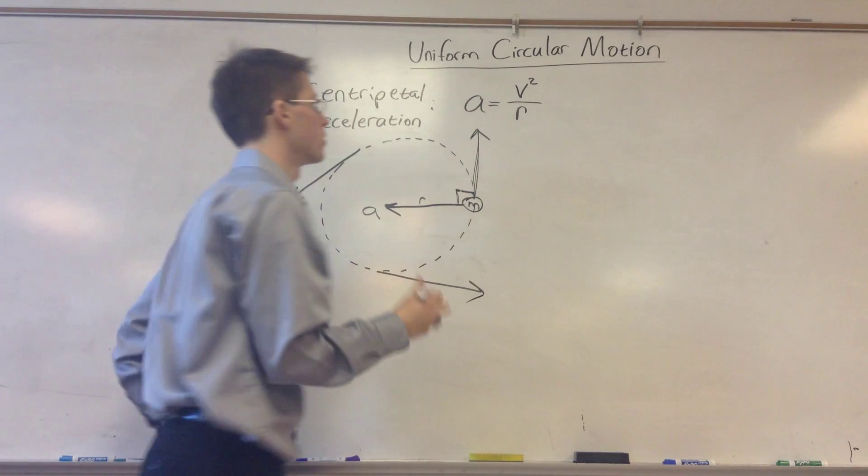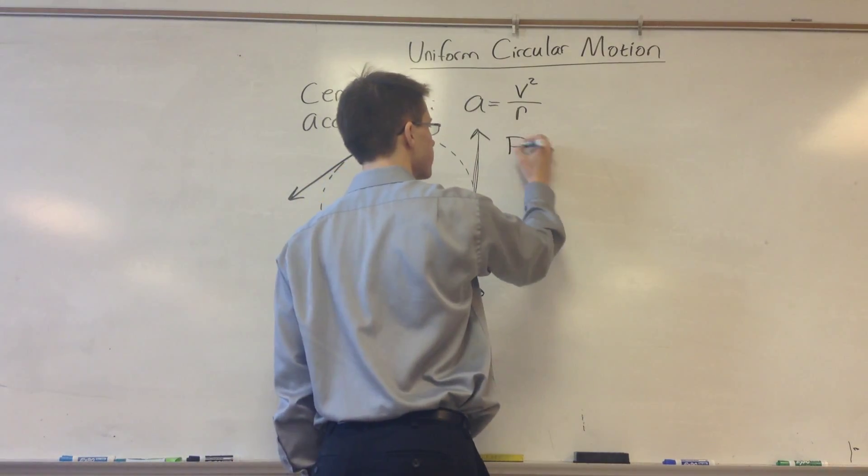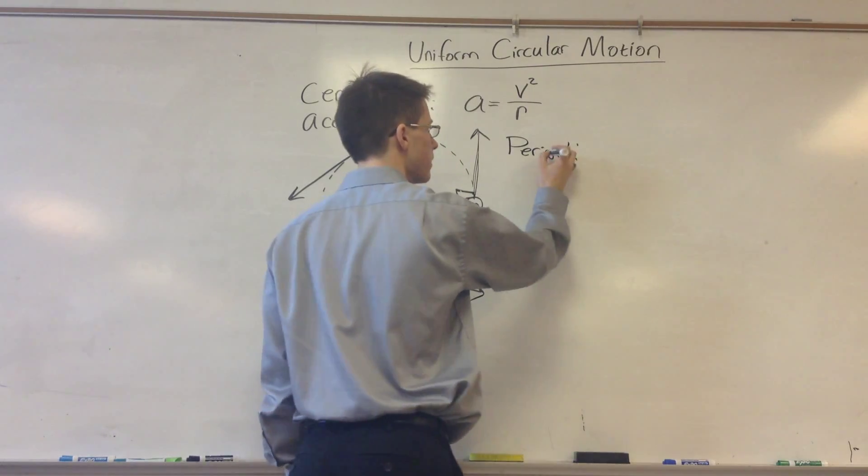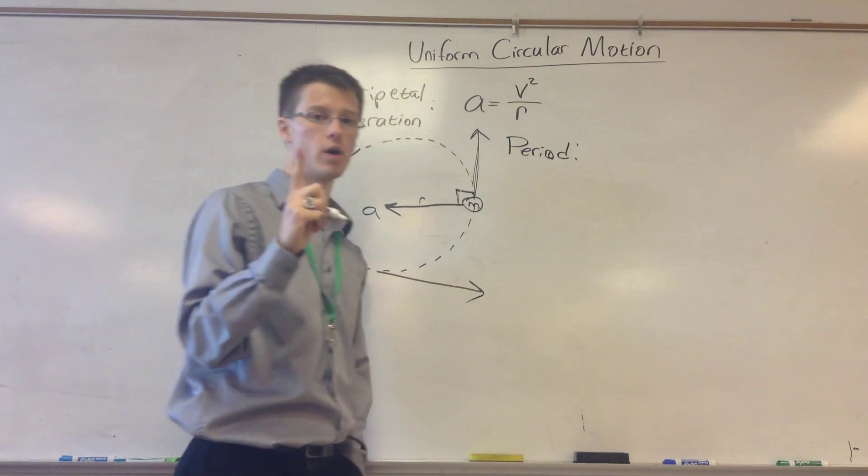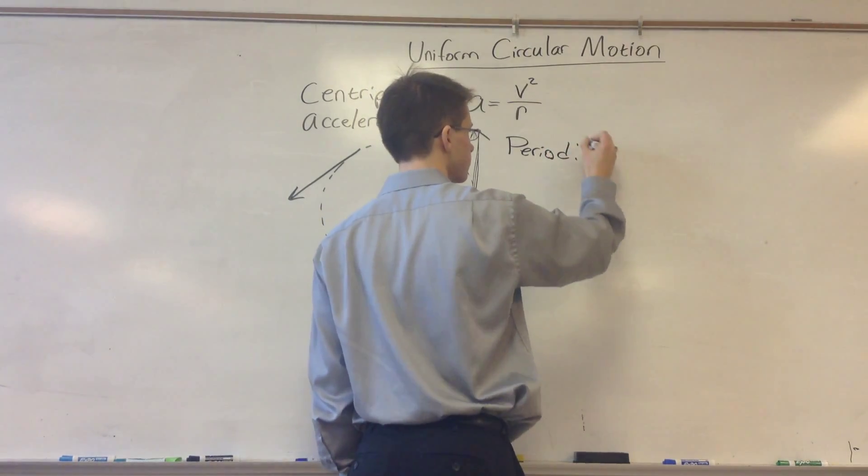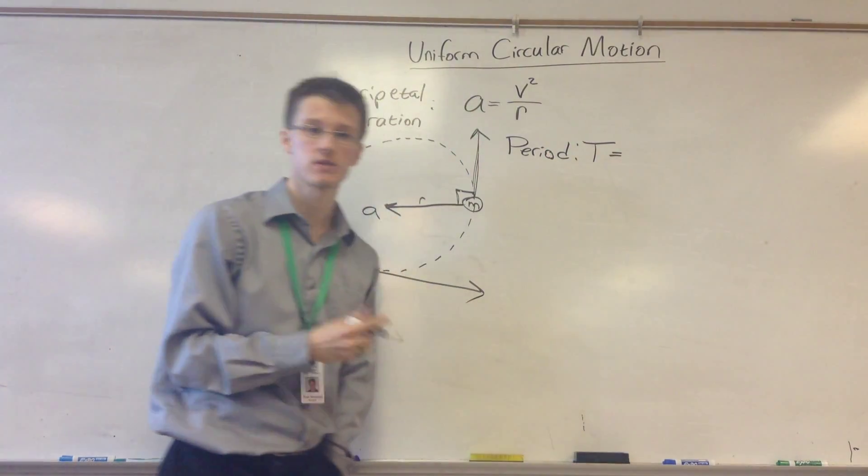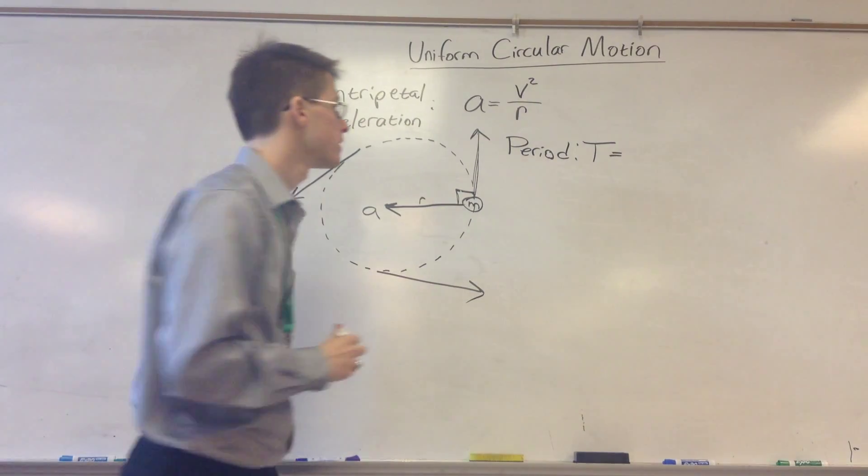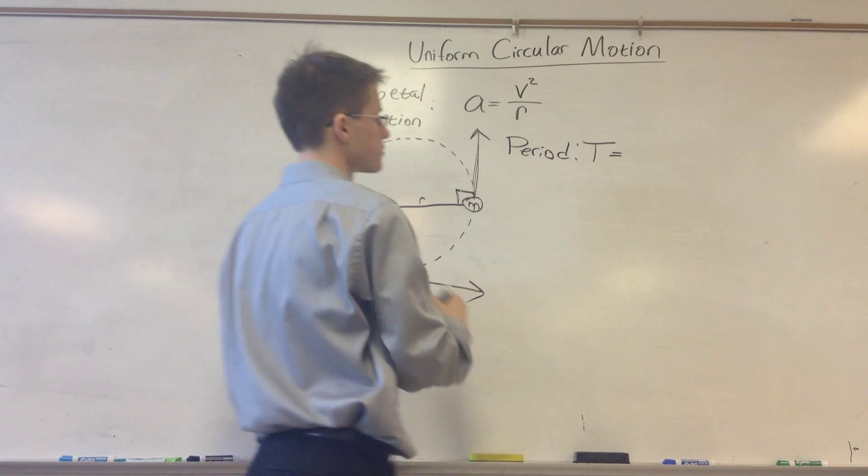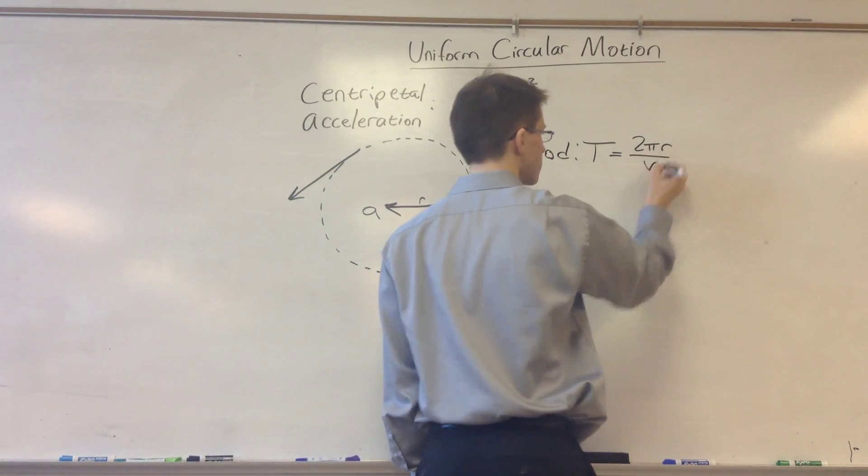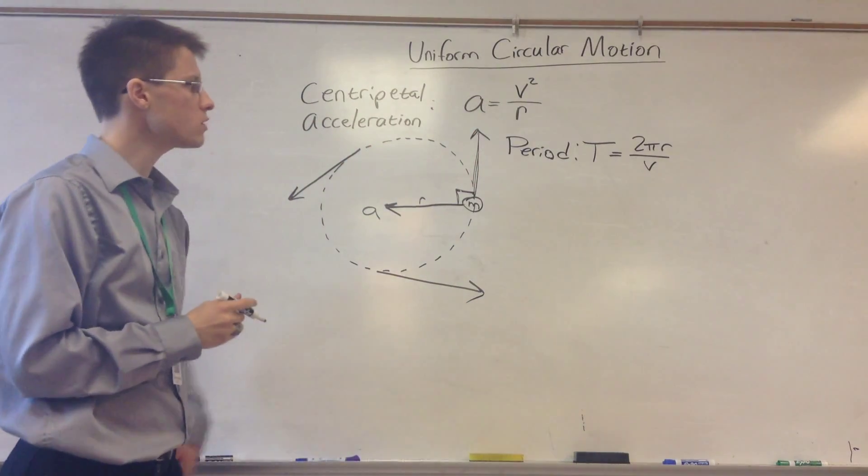Another valuable equation to know is the period of an object moving in a circle. Period is the amount of time it takes for it to complete one full rotation. So, we're going to call that T, or time, because it's the length of time. And time is equal to distance over speed, right? So the distance it's going to travel, if it goes in a circle, is 2 pi r, and the speed is going to be v. So that's our period.